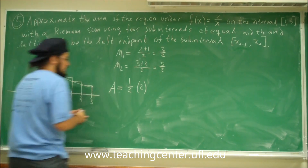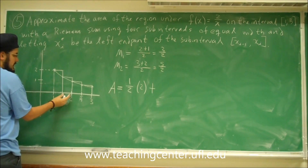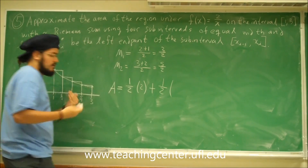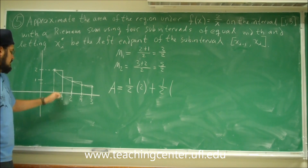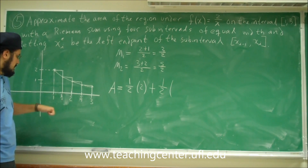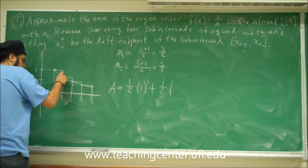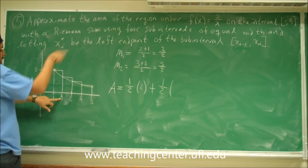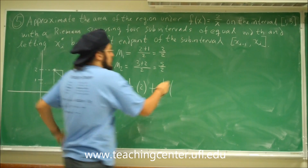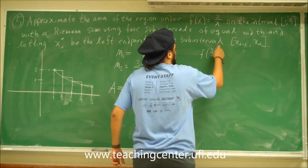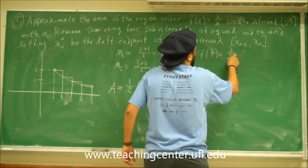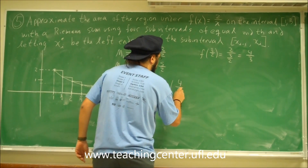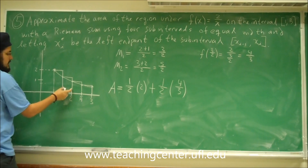Now add the area of the second rectangle. The width is 1/2. To find the length, plug in 3/2 into the function: f(3/2) = 2 divided by 3/2 = 4/3. So that rectangle's area is 1/2 times 4/3. Then for the third rectangle, plug in 2: f(2) = 2/2 = 1. So we have 1/2 times 1.